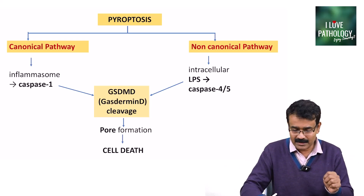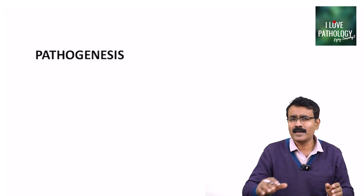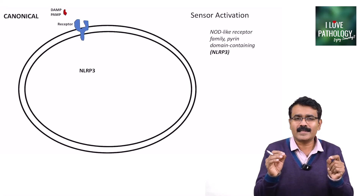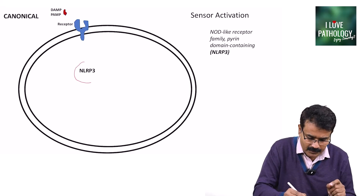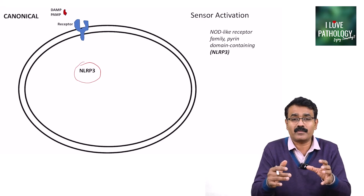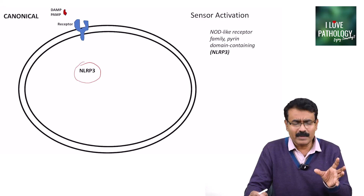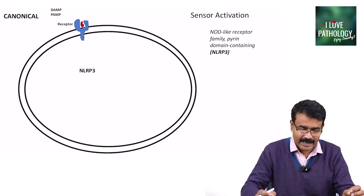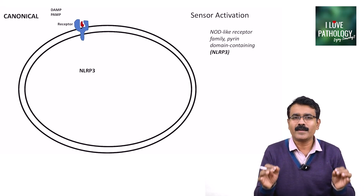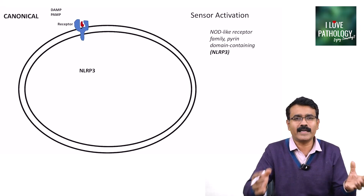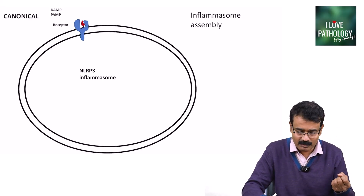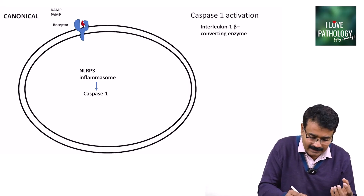Let us look into the canonical pathway in detail. The first step is sensor activation. NLRP3 — NOD-like receptor family, Pyrin Domain-Containing — is present in the cytoplasm in monomer form. When microbial proteins, DAMPs, and PAMPs bind to the receptor, NLRP3 is activated and oligomerizes to form an inflammasome. Once the inflammasome is assembled, it activates caspase-1.